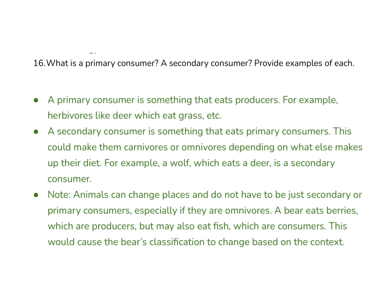Question number 16: what is a primary consumer, a secondary consumer, and provide examples of each. A primary consumer eats the producers — herbivores like deer, which eat grass or plants. A secondary consumer eats the primary consumers, typically carnivores or omnivores. A wolf eats a deer, and since the deer was a primary consumer, that makes the wolf a secondary consumer. Animals can change trophic positions — a bear eating berries would be a primary consumer, but a bear eating fish would be at a higher level. Context is really important to figuring out where an organism falls on the energy pyramid.